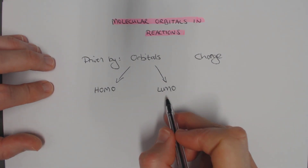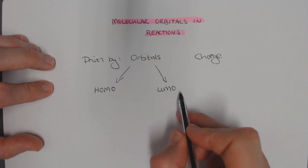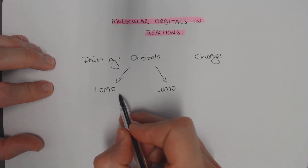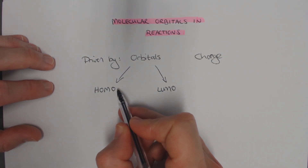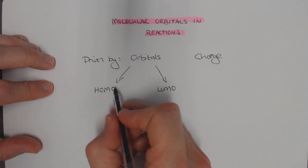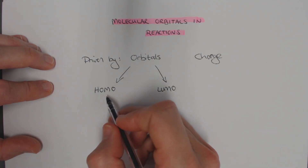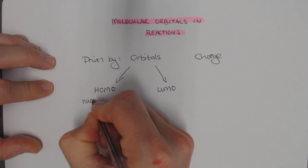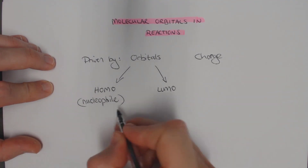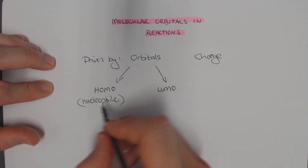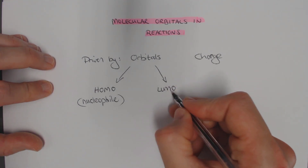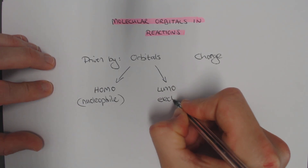The reason these two are important is that the HOMO, because it's the highest occupied molecular orbital — in other words, the orbital that has electrons in it — is the orbital that's going to donate electrons to something. In organic chemistry, when something is donating electrons, we call that the nucleophile. And the lowest unoccupied molecular orbital is the one that accepts electrons, and that is therefore the electrophile.